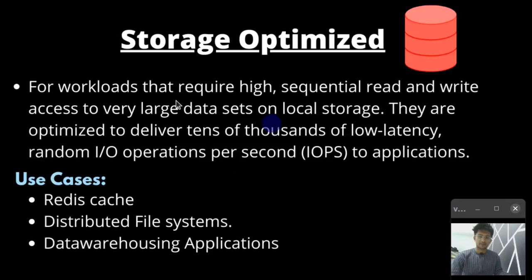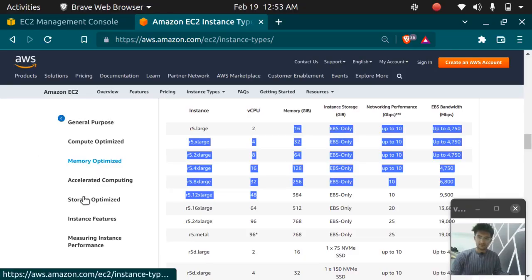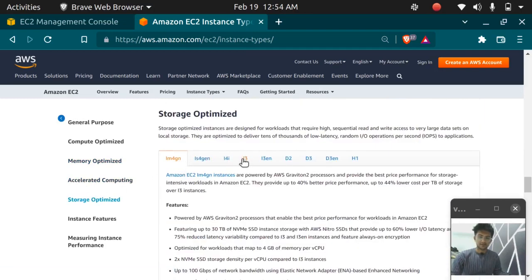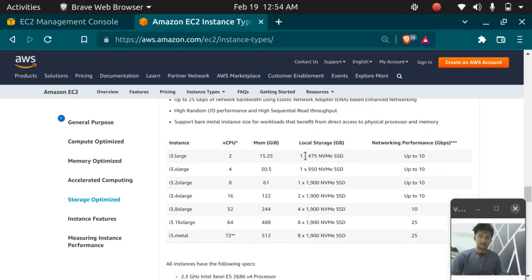The next type is storage optimized. For workloads that require high sequential reads and write access to very large data sets on local storage, these are optimized to deliver tens of thousands of low-latency I/O operations per second, or IOPS, to the application. The use cases include Redis cache, distributed file systems, and data warehousing applications. This instance type includes the I family, and they have more storage compared to CPU and memory. Whenever you need more storage, you go for storage optimized.